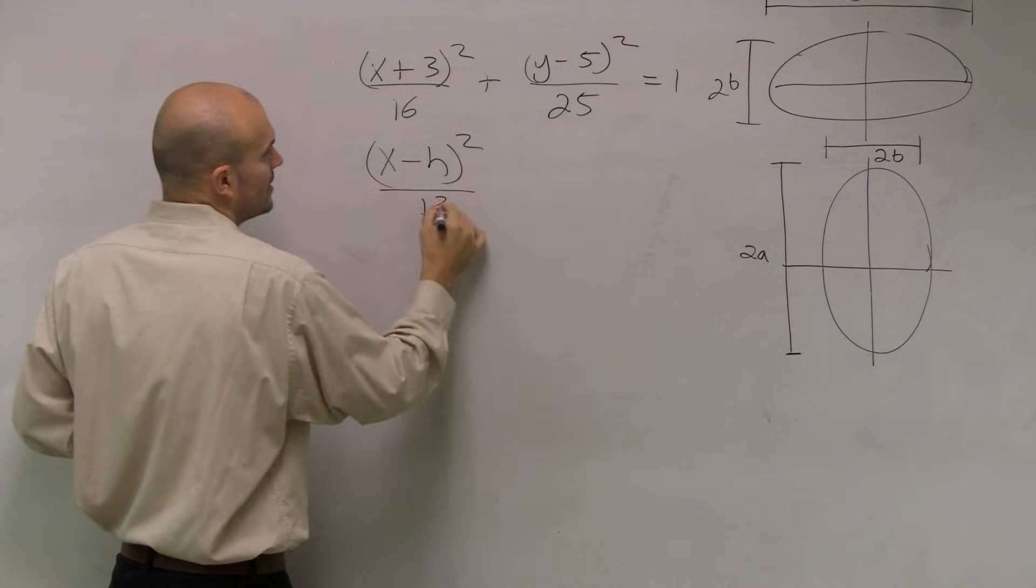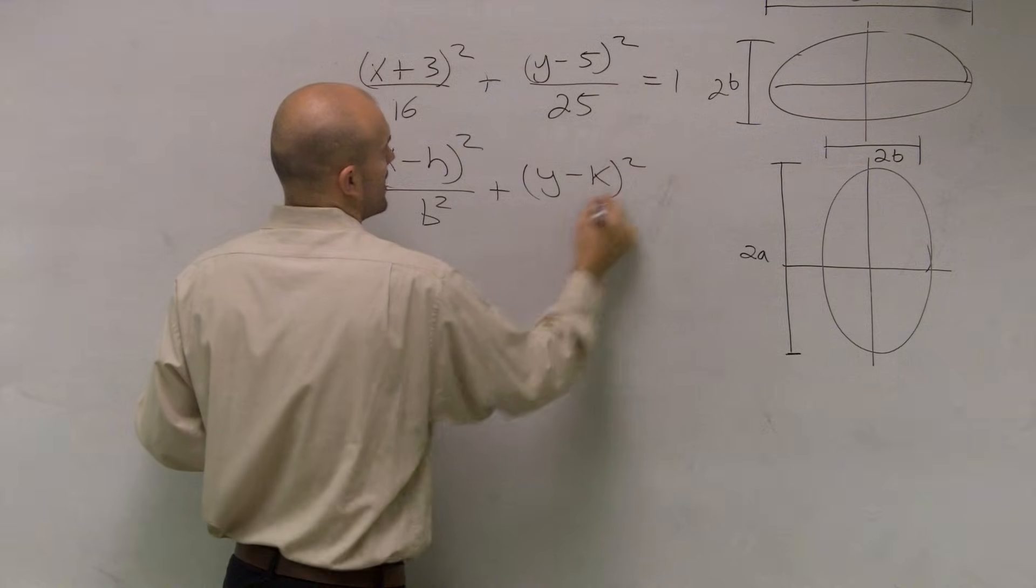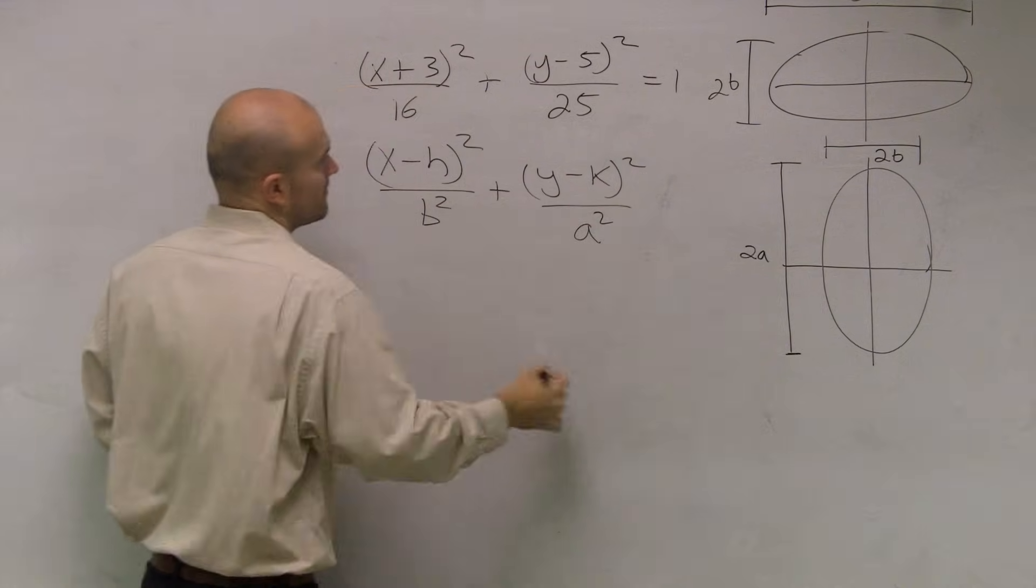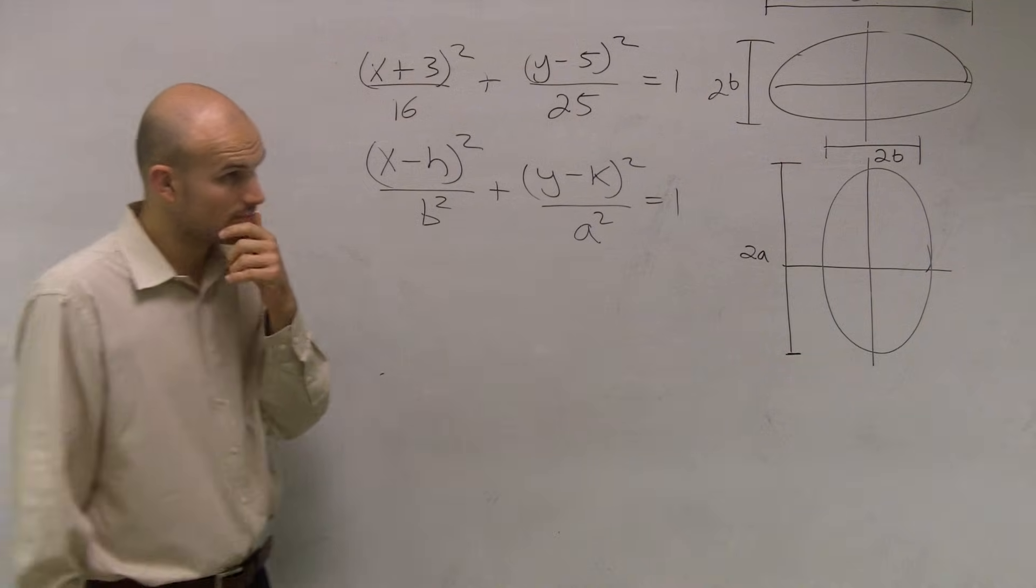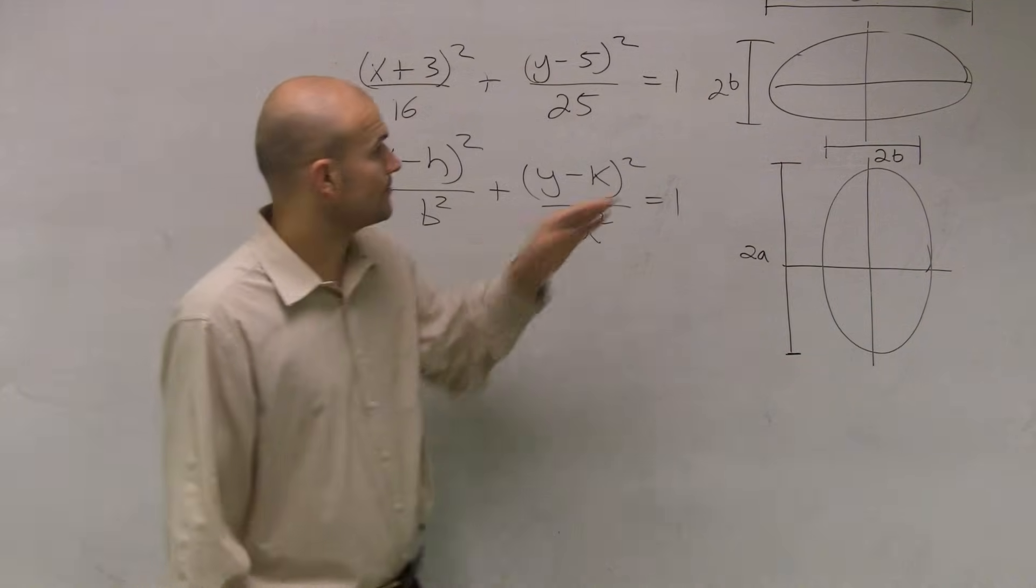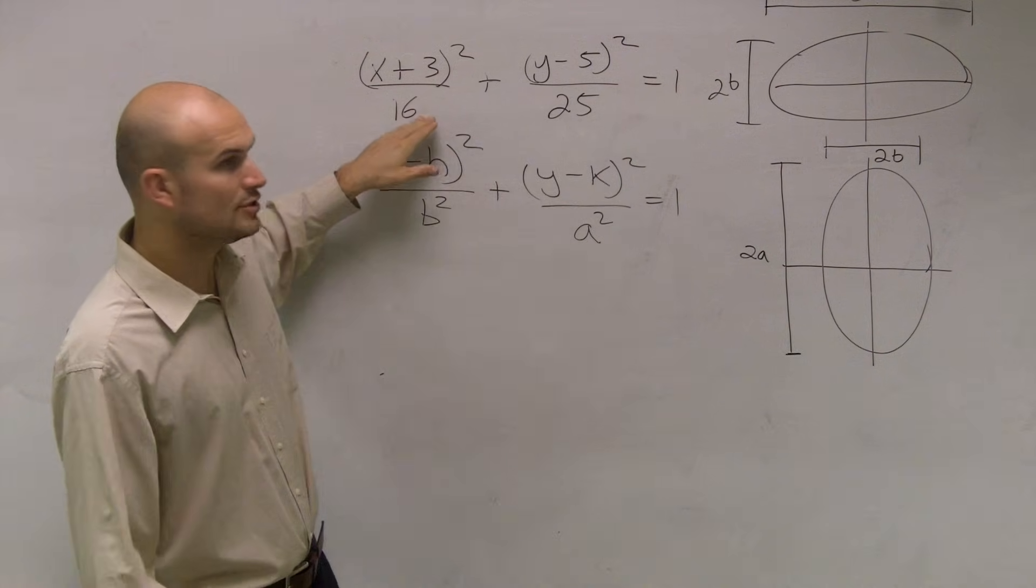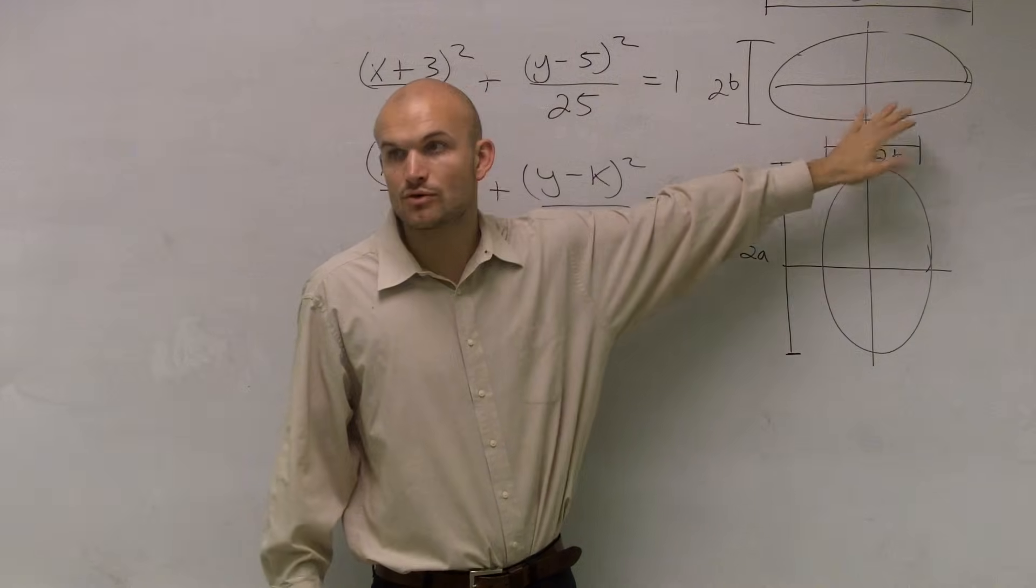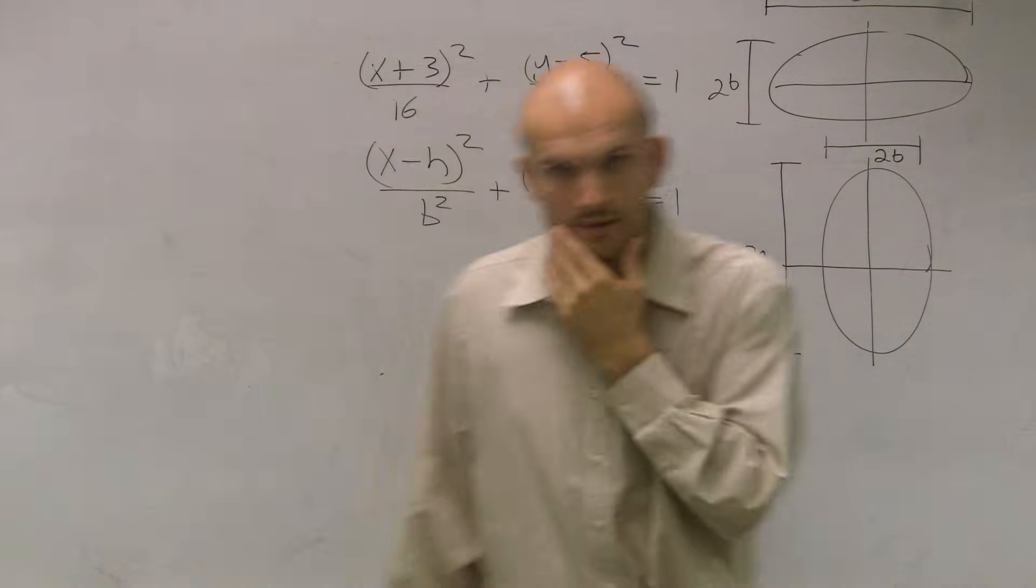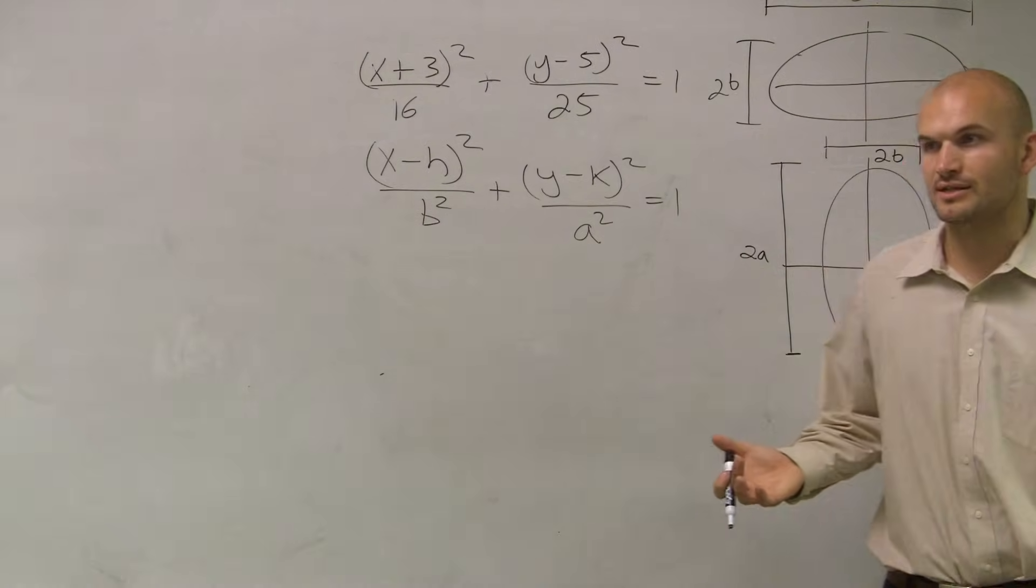x minus h squared all over b squared plus y minus k squared all over a squared. Wait. So the a squared is under the y, then it's a horizontal axis of symmetry? It's a vertical. If it's under the y, it's a vertical. If your a, your larger number, was under the x, that is going to be a horizontal. It can be stretched horizontally. Does anybody have any questions on how to determine that?